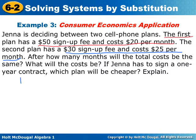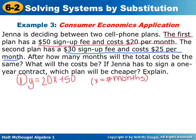Plan number 1. I would write the equation as y equals 20x plus 50. Because there's a one time fee of $50. And it costs her $20 for every month. So x is going to stand for the number of months that she's using this plan. Plan 2. The total cost is going to be $25 per month plus $30. A $30 sign up fee.